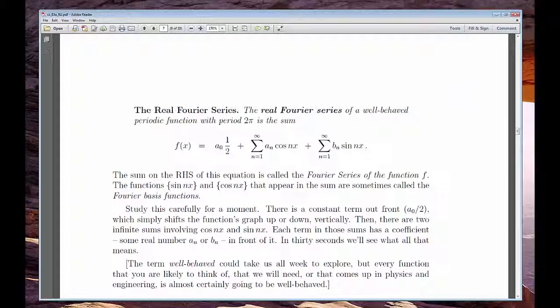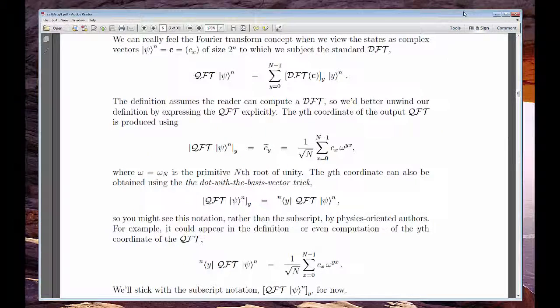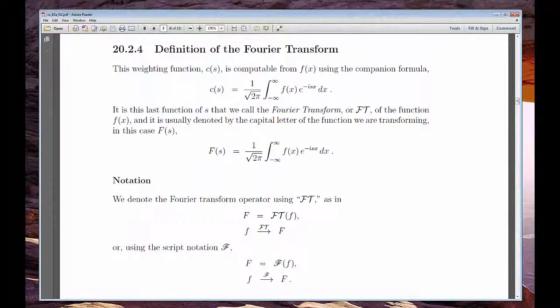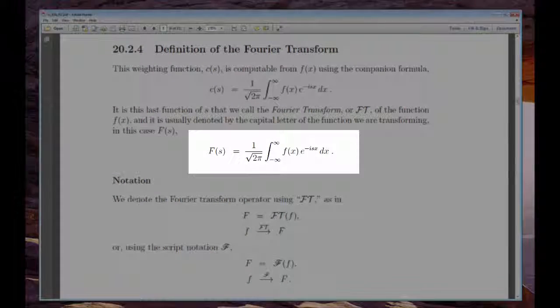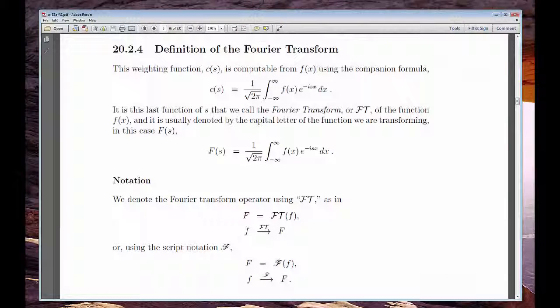Fourier series where we started are sums, and the QFT where we're headed is also a sum. But today's continuous Fourier Transforms are integrals. So why do we have to get messy with integrals if we're going to ultimately return to sums?